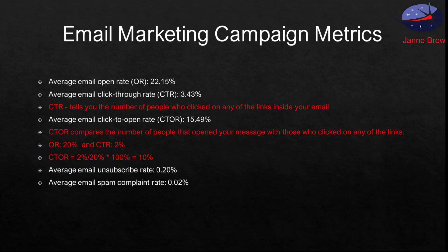Some email service providers may not provide you with the click-to-open rate, but you can calculate one from the other. For example, if you've got an open rate of 20% and a click-through rate of 2%, you can calculate the click-to-open rate from those. The two statistics are very much related, so don't get too hung up about it — both are quite valuable to have in your armoury to check how well your campaign's going.